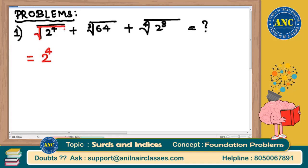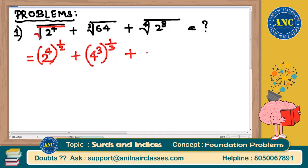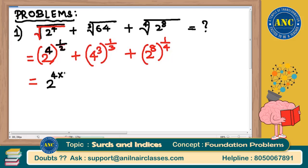Square root is nothing but power 1 by 2, so it is 2 power 4 raised to 1 by 2. For the second term, 64 is nothing but 4 power 3, and cube root is nothing but power 1 by 3. For the third term, 2 power 8 with fourth root is power 1 by 4. Using the law a power m whole power n = a power m into n.